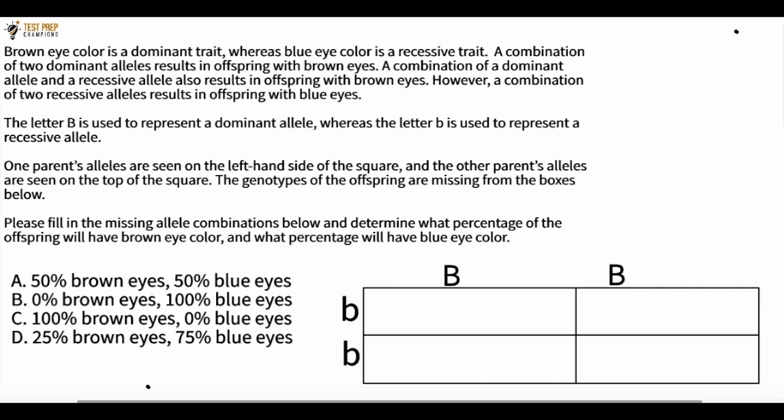However, a combination of two recessive alleles results in offspring with blue eyes. The letter capital B is used to represent a dominant allele whereas the letter lowercase b is used to represent a recessive allele.